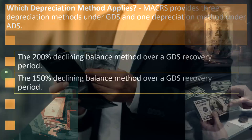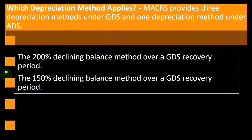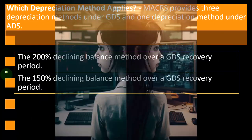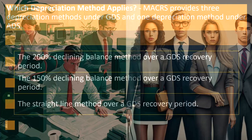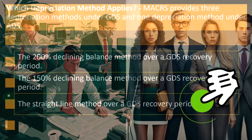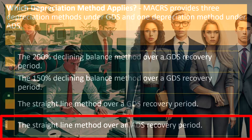There's also the 150% declining balance method over the GDS recovery period — a similar process, more front-loaded than straight-line but less than the 200% declining balance. Then there's the straight-line method over GDS recovery period — the standard baseline method, allocating an even amount per year for however many years apply. Finally, there's the straight-line method over an ADS recovery period.